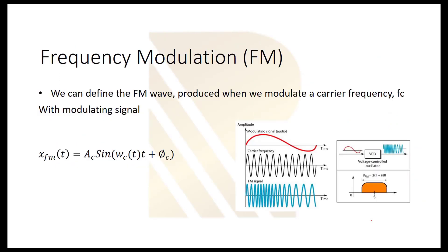Let's talk about frequency modulation. In frequency modulation, this time we are going to put the data inside the frequency of our carrier instead of the amplitude. We can define the FM wave produced when we modulate the carrier frequency FC with the modulating signal. The carrier expression is AC · sin(ωC·t).